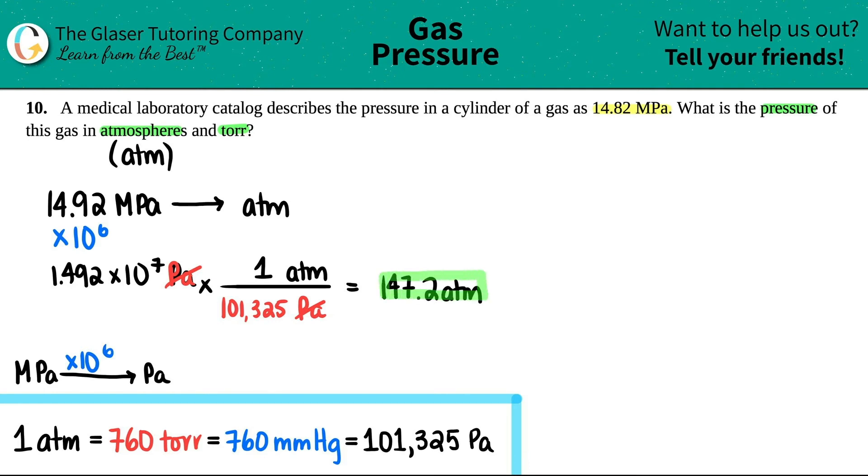Okay so that would be the same amount of pressure just said in a different value so 14.82 megapascals is the same thing as 147.2 atm that's a lot of pressure. Now let's just convert it to torr so I'll just take it from this one again right, 1.482 times 10 to the 7 pascal.